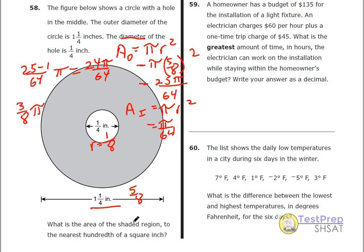That's my answer. However, let's read the question again, just to check. They want it to the nearest hundredth. So this is grid in.